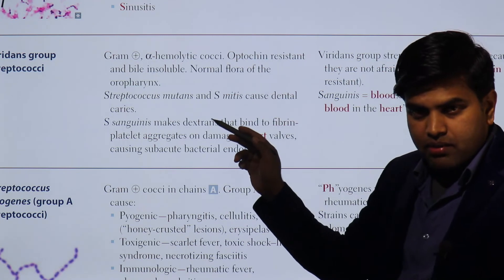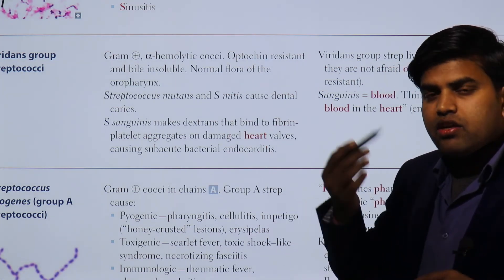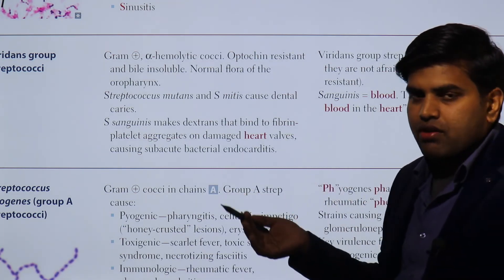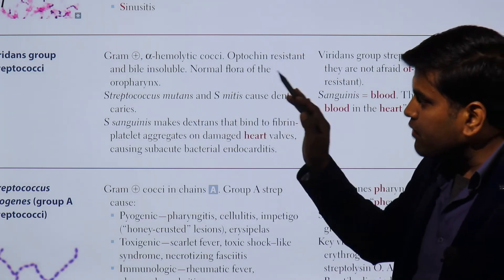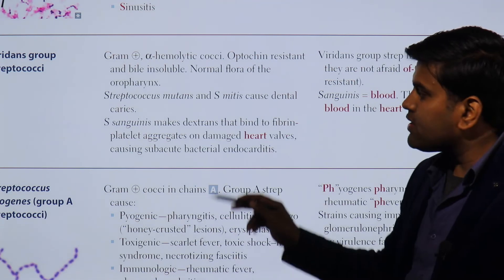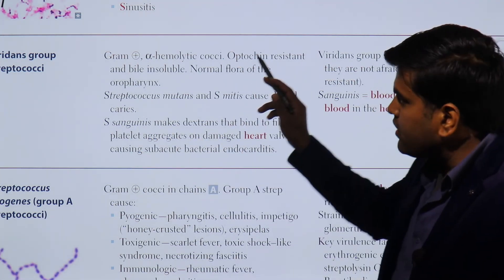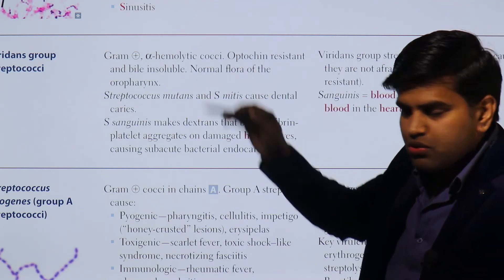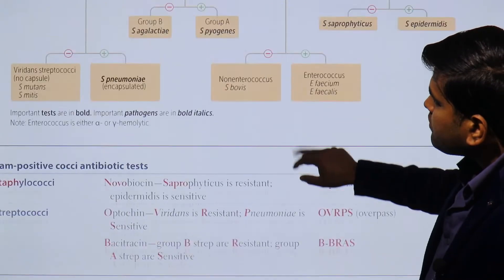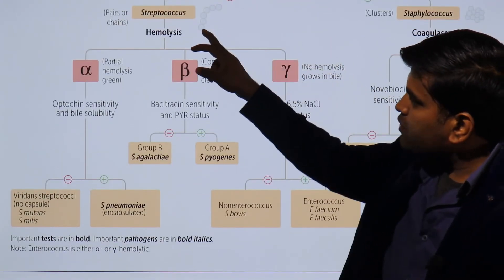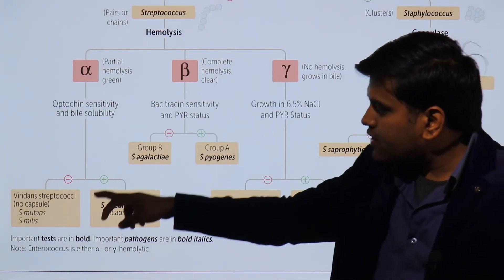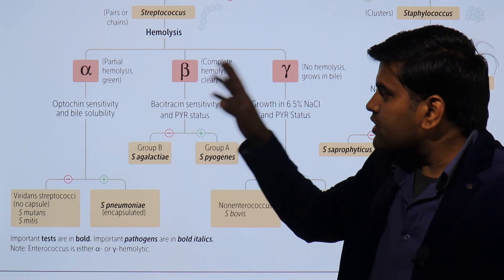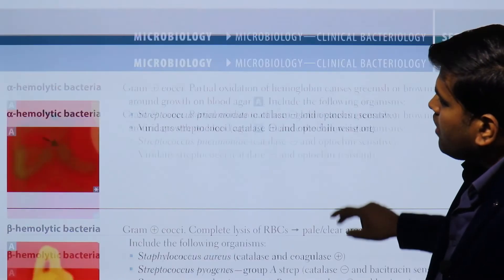Viridans streptococcus is responsible mainly for dental plaque and subacute infective endocarditis. Note that acute endocarditis — the aggressive form — is due to staphylococcus aureus, while this less virulent group causes subacute bacterial endocarditis via streptococcus sanguinis. To summarize: catalase negative cocci belong to the streptococcus group; within that group, alpha hemolytic organisms include streptococcus pneumoniae — optochin sensitive and bile soluble — and viridans streptococci — optochin resistant and bile insoluble.